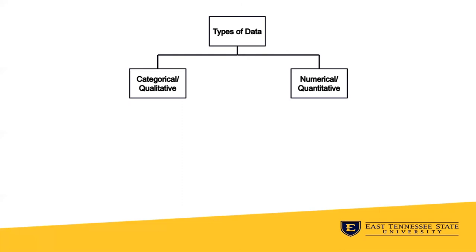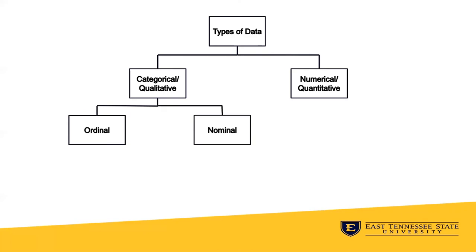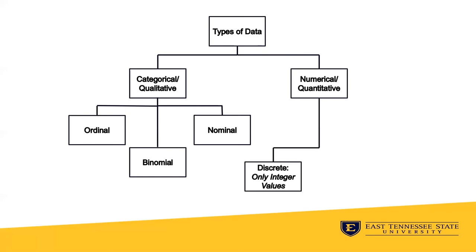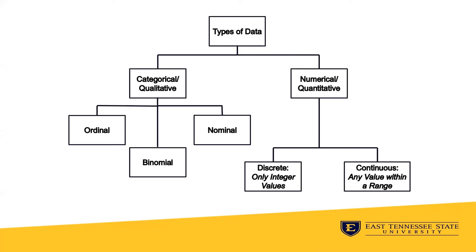We also have to consider the types of data we have available. There are several types that each require specific approaches for summarizing. The two overarching categories of data are categorical or qualitative, and numerical or quantitative. Within the categorical class of data we have a handful of subtypes: ordinal, nominal, and binomial. The numerical data class includes discrete, which includes whole numbers or integers, and continuous, which can include any value along a range. There are additional more specific types of data within the classes presented here, but for our purposes we need only to concentrate on these.